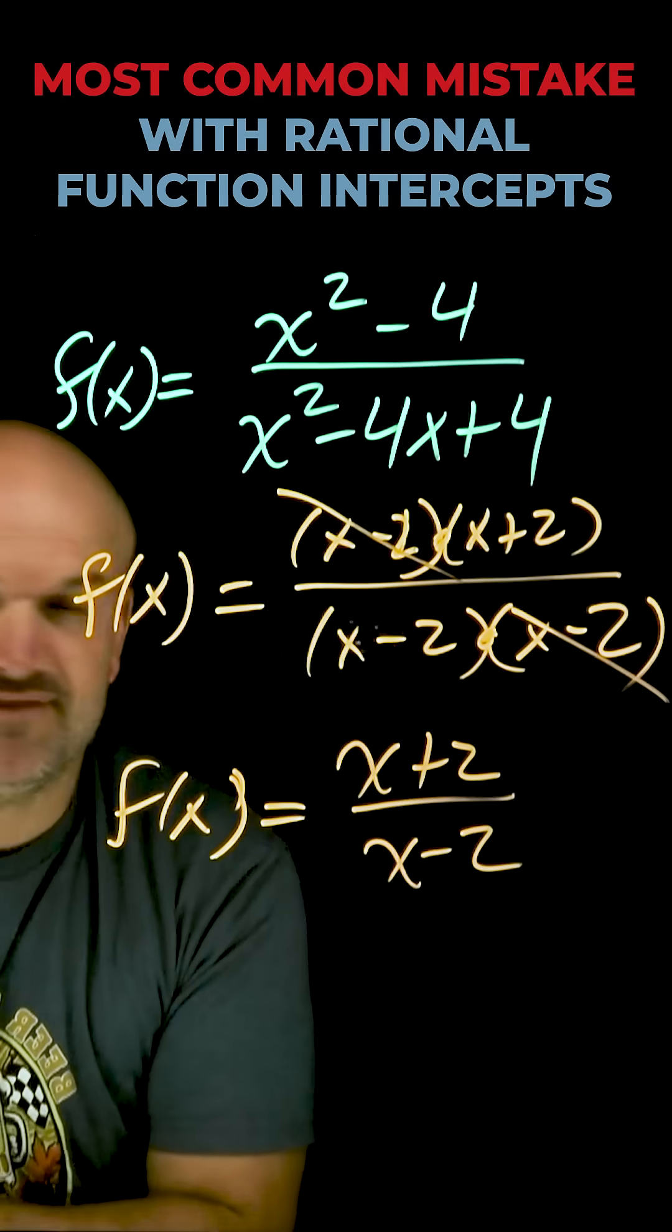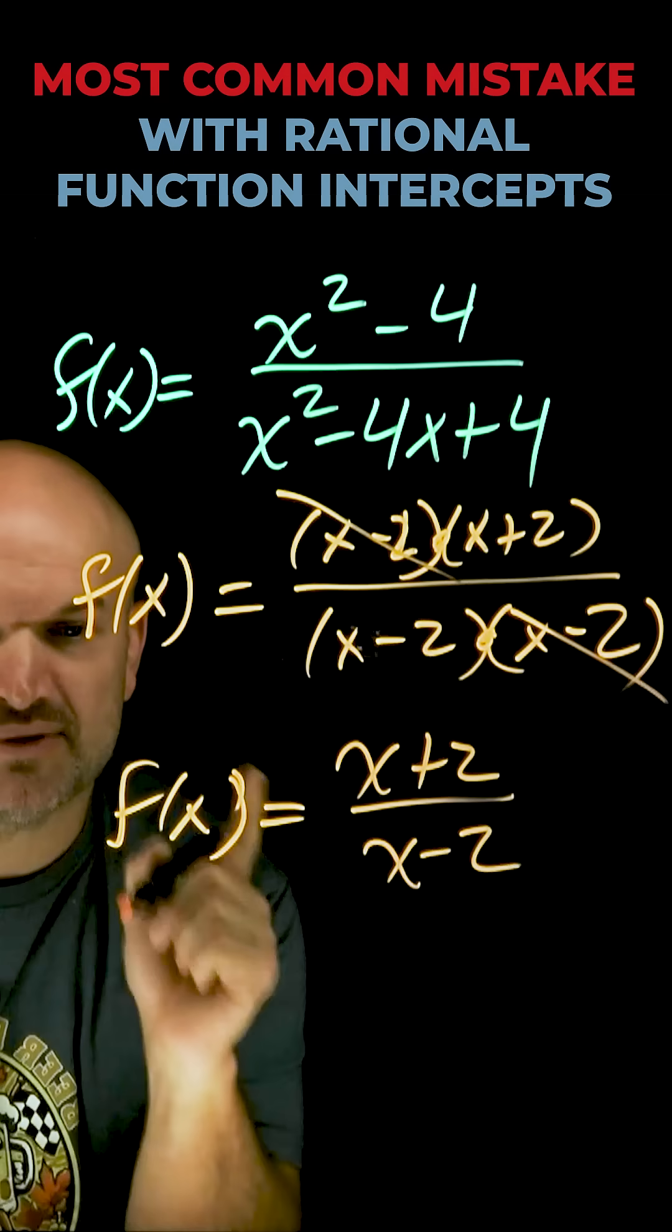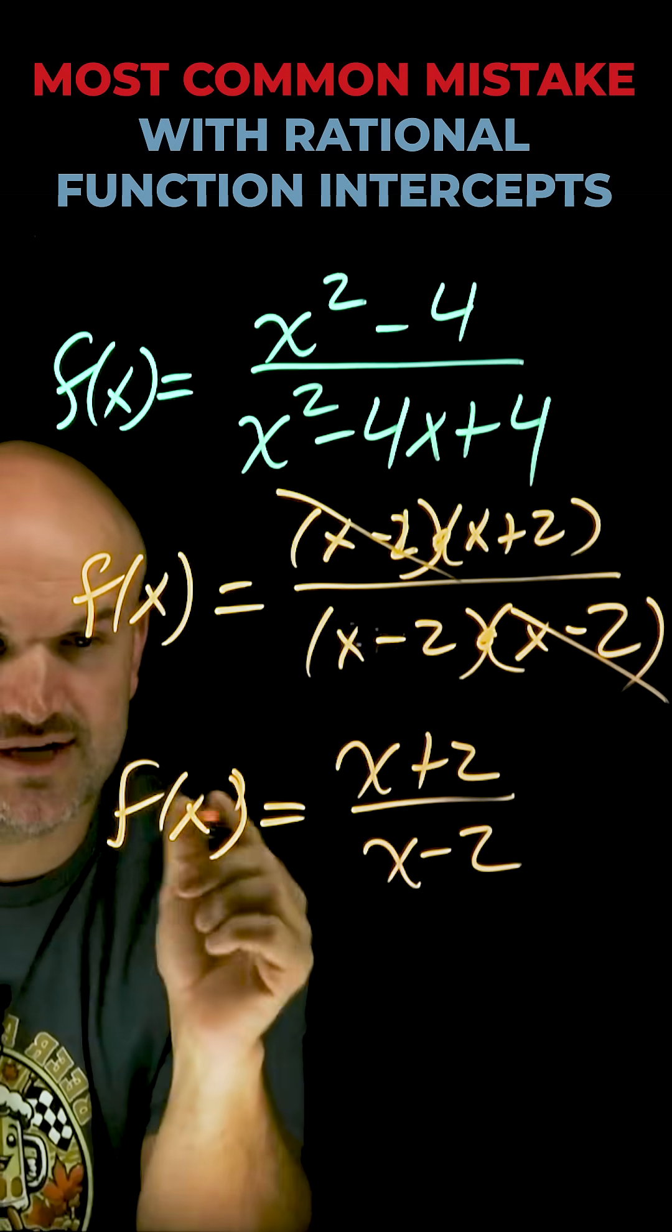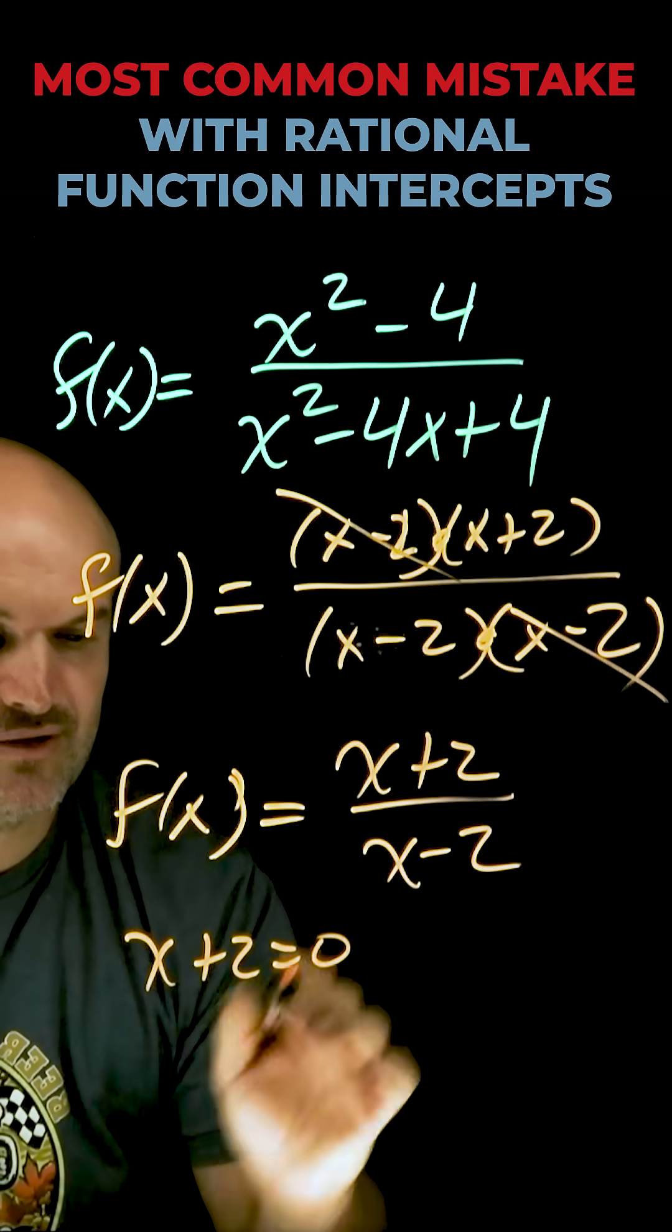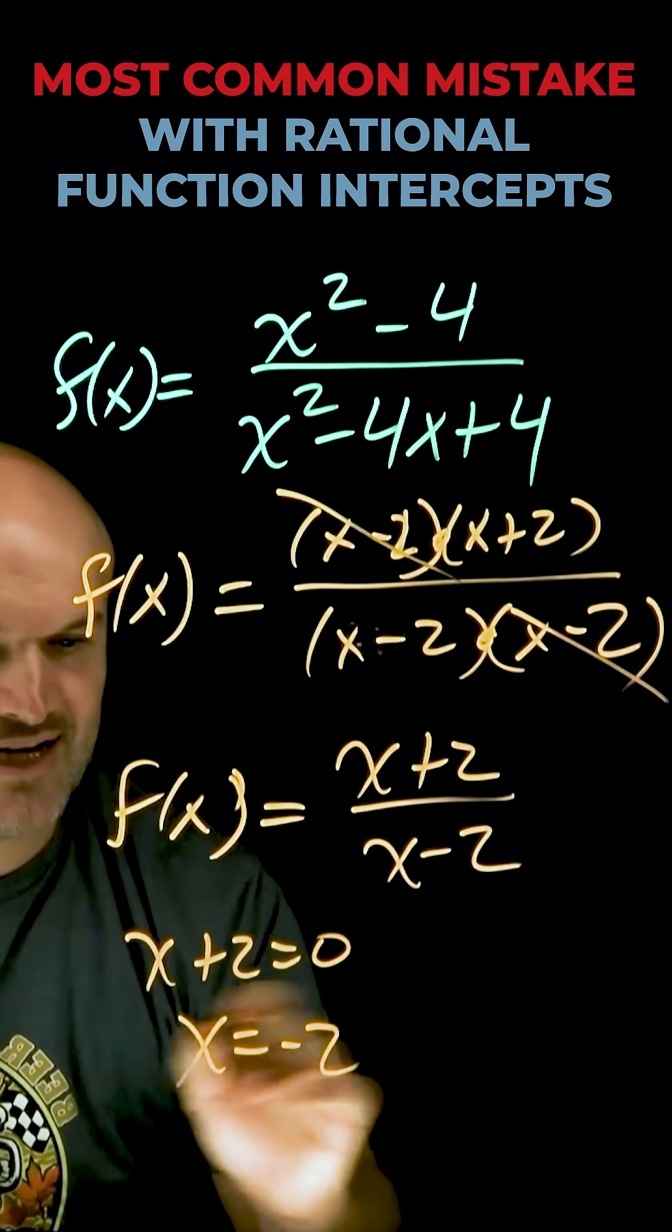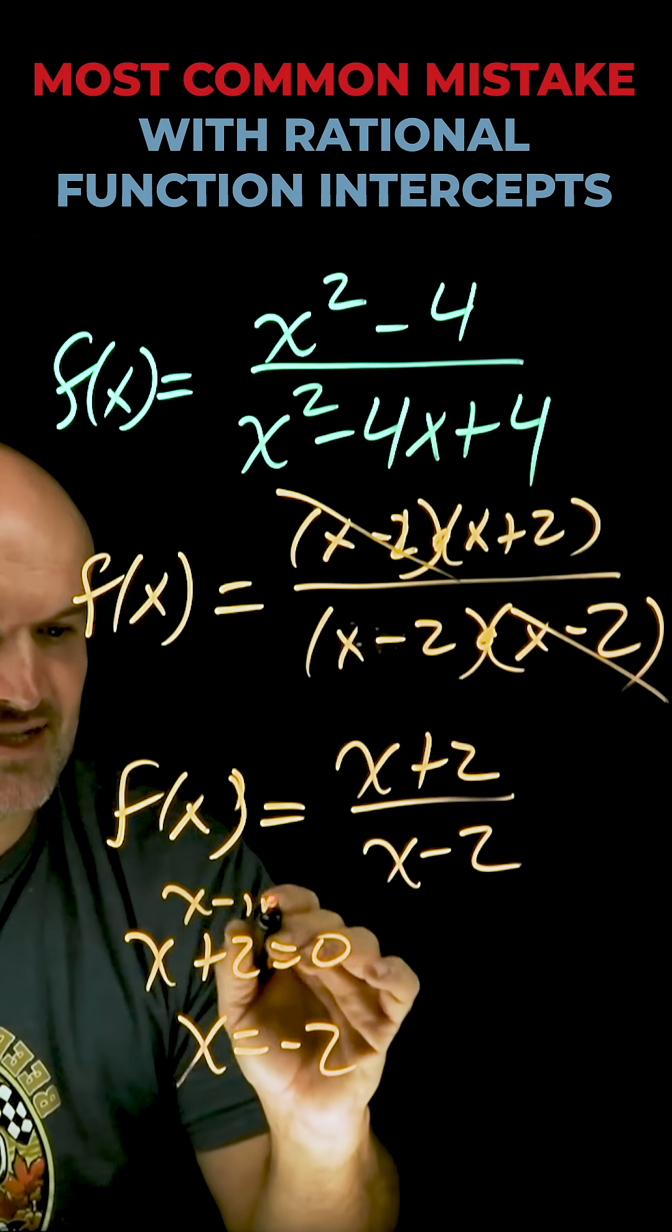Now I can identify my x and my y intercepts. Remember the x-intercept is when y is equal to 0, or f(x), or simply you could just set your numerator equal to 0. So x+2 is equal to 0, so x equals negative 2. That is going to be my x-intercept.